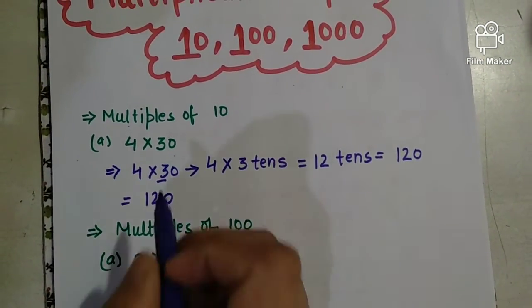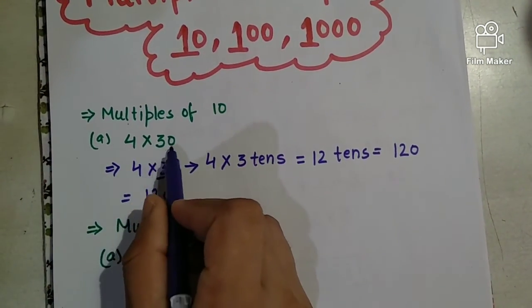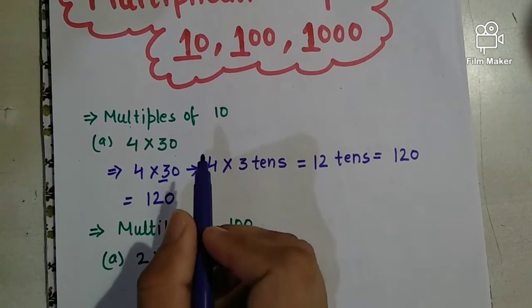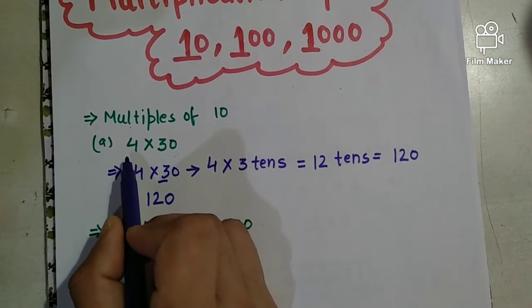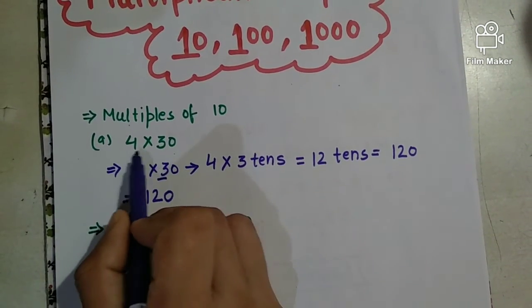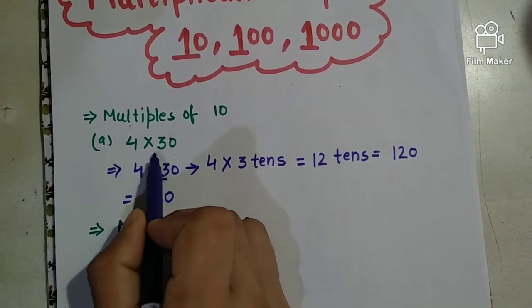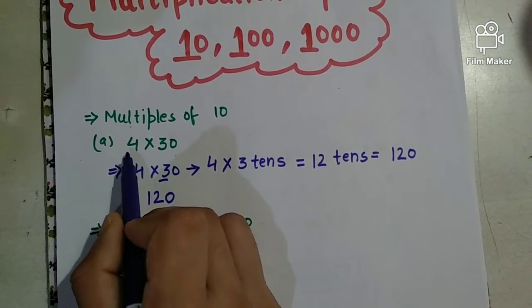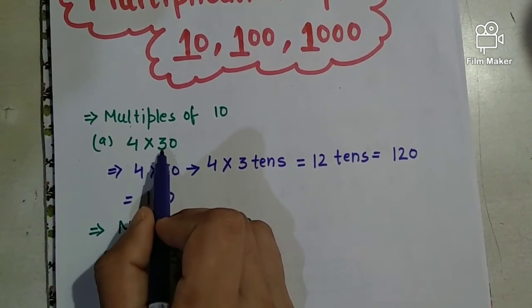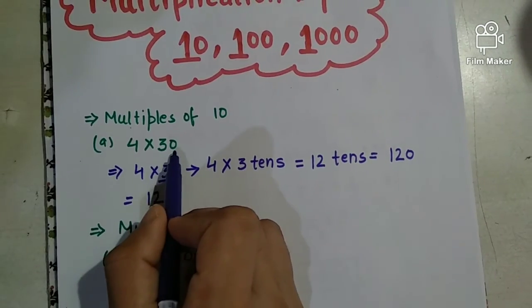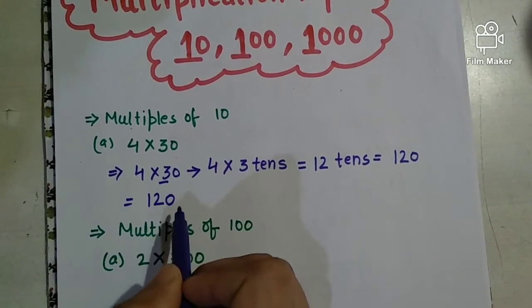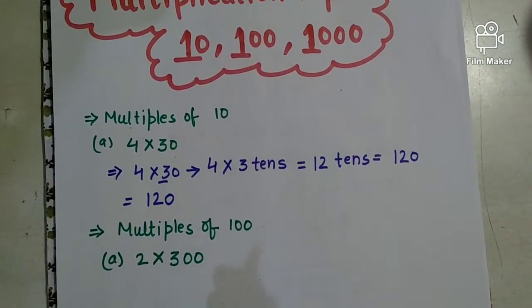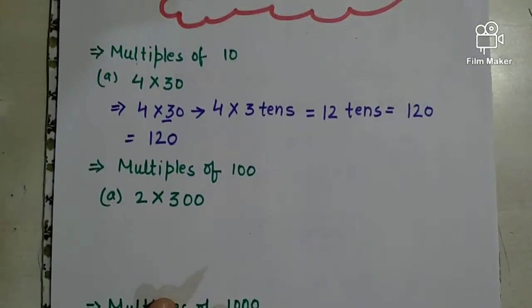When we multiply any number by thirty — that is, by tens — four threes are twelve, and we add one zero to the end. So we get the answer.